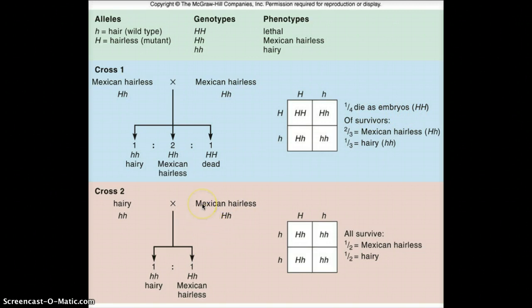And then they have another cross down here. So here we have a heterozygote crossed with a homozygous recessive. And so here we have our Punnett square over here. And in this instance, they're all going to survive. So we end up with two heterozygotes and two homozygous recessive, which is a one to one ratio.